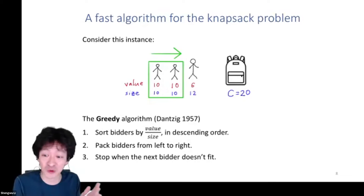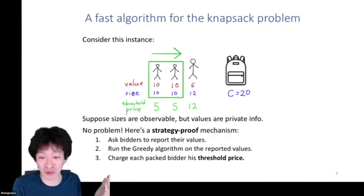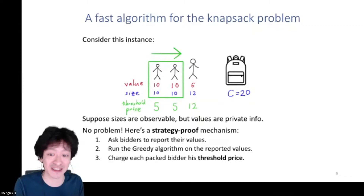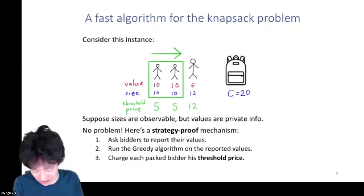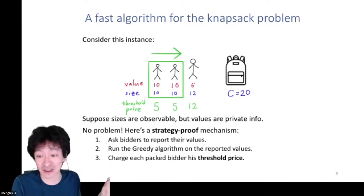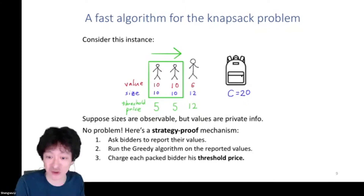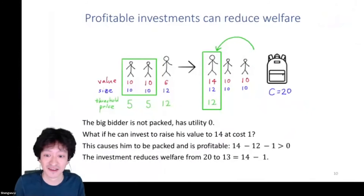This assumed we knew the bidder's values as inputs. We can turn this into a strategy-proof mechanism: ask the bidders to report their values, run the greedy algorithm on the reported values, and charge each packed bidder his threshold price — the lowest value that bidder could report while still being packed. So the little bidders' threshold price is 5, and the big bidder's threshold price is 12.